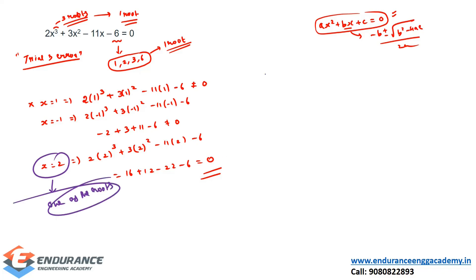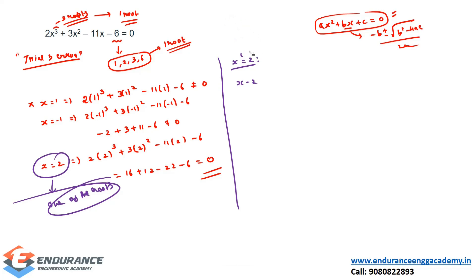Since x = 2 is a root, we now follow the long division method. If x = 2 is the root, take the factor (x - 2). Note: if the root were x = -2, you would take (x + 2). In this case, we divide our original equation 2x³ + 3x² - 11x - 6 by (x - 2) using long division.